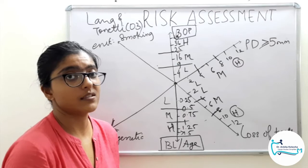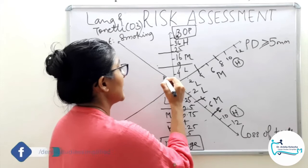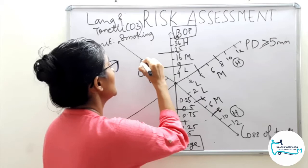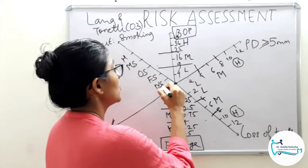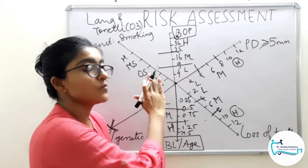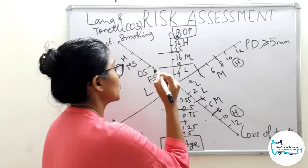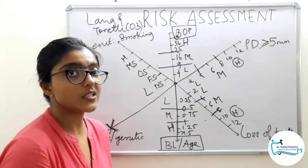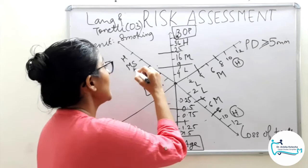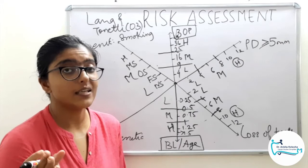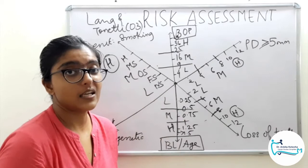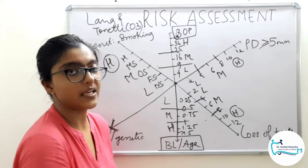The sixth factor is environmental factors, represented by smoking status. The scale covers non-smoker, former smoker, occasional smoker, moderate smoker, and heavy smoker. Non-smokers and former smokers — those who stopped smoking five or more years ago — are at low risk. Occasional smokers consuming fewer than 10 cigarettes per day and moderate smokers consuming 10 to 19 cigarettes per day are at moderate risk. Heavy smokers consuming 20 or more cigarettes per day are high risk patients.